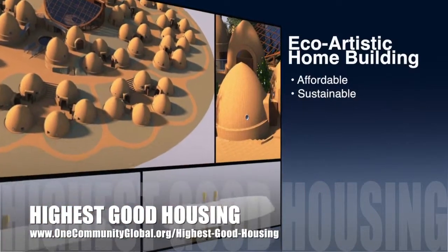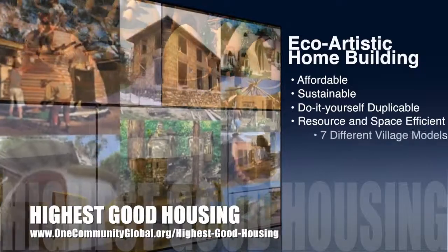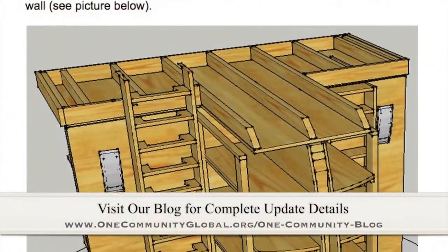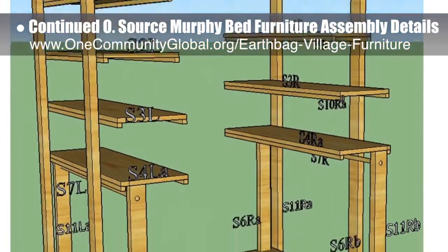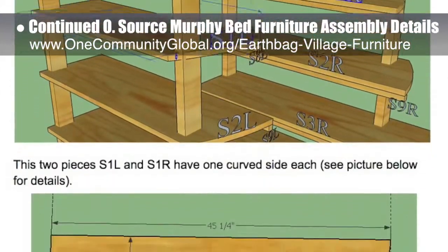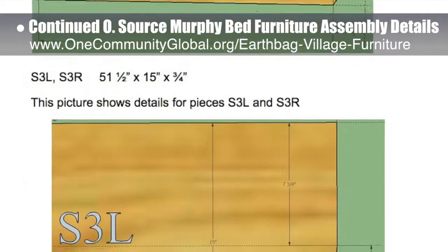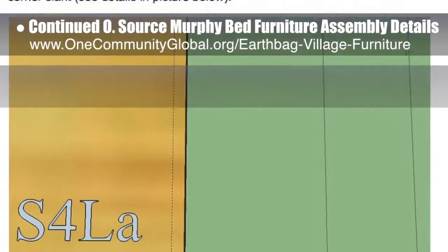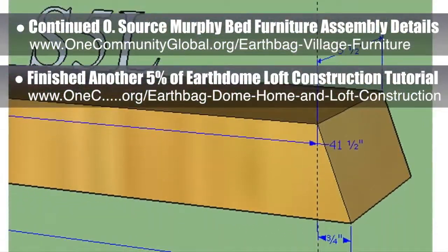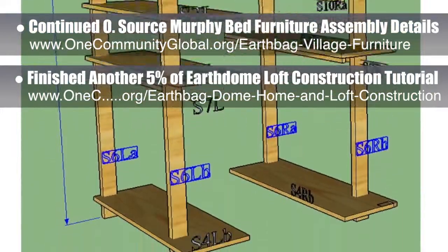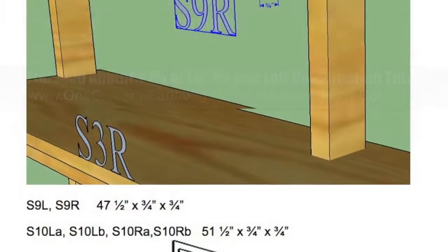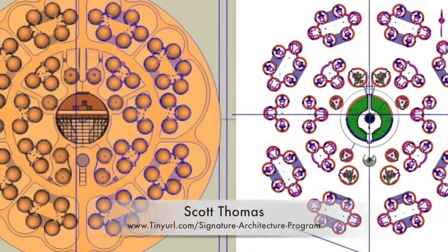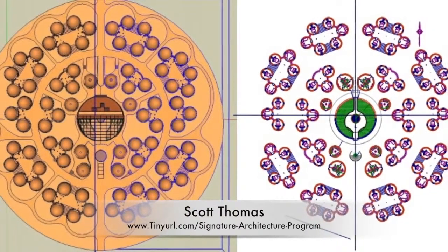OneCommunity's approach to Highest Good Housing is eco-artistic home building that is affordable, sustainable, do-it-yourself duplicable, resource and space efficient, and consists of seven different sustainably constructed village models. This week the core team continued progress on the assembly specifics for the open source Murphy bed furniture, which will be part of the EarthBag Village and upcoming crowdfunding campaign. We finished cutting lumber and labeling pieces for two back shelves and began exploring a new shelving and ladder design — now 67% complete. Behind the scenes, we also finished another 5% of the EarthDome Loft construction tutorial specifics, including deck install details, joist spacing, screw sizes, and structural calculations — now 60% complete. Scott Thomas and the Shadow Ridge Signature Architecture Program team finished putting the complete EarthBag Village components together in AutoCAD as a 2D layout created from our 3D SketchUp files.